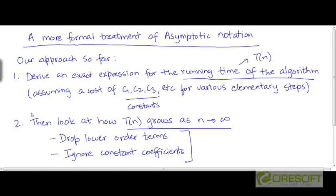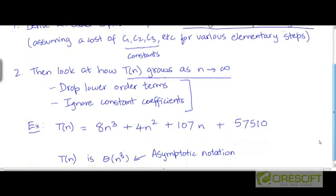Then having derived an overall expression for T based on the pseudocode of the algorithm, we then looked at how T grows as the input size becomes very large. So we decided to drop the lower order terms and ignore constant coefficients.